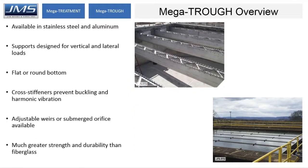To summarize: megatrawls are available in stainless steel and aluminum, custom designed for vertical and lateral loads as needed. We can supply these in flat or round bottoms. The cross-stiffener design is custom designed to prevent harmonic vibrations. We can provide adjustable weirs, V-notch weirs, or submerged orifices, and we have much greater strength and durability than fiberglass.